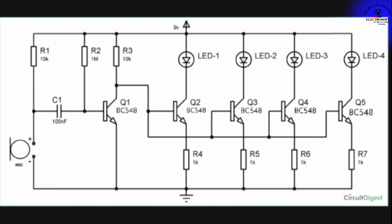Friends, the dancing LED project's main component is the mic, which is in this corner. This mic inputs signals and gains music to sense, and the LED lights glow. This mic converts sound signals into voltage levels.